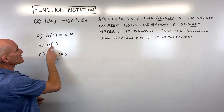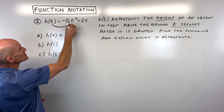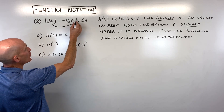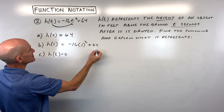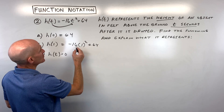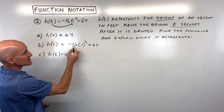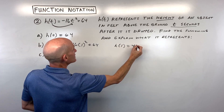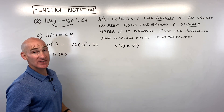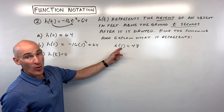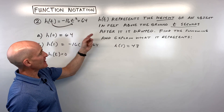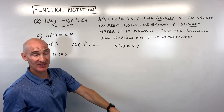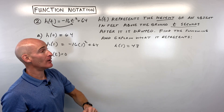For part B, H of 1: whatever's in parentheses goes in for T on the right. So this is negative 16 times 1 squared plus 64. One squared is 1, times negative 16 is negative 16, plus 64 is 48. So H of 1 is equal to 48. After one second — because T is the time in seconds — the height is 48 feet. The object is falling and is 48 feet above the ground.